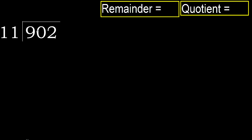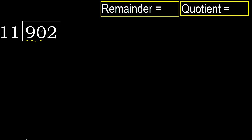902 divided by 11. 9 is less, therefore next. 90 is not less, therefore work with 90.